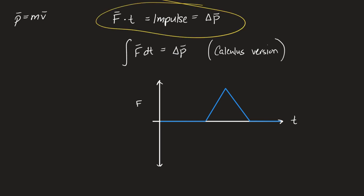We ended with impulse on Friday. We talked about the two parts of impulse: the cause and the effect. The cause is applying a force over a period of time. The effect is that it will change something's momentum.